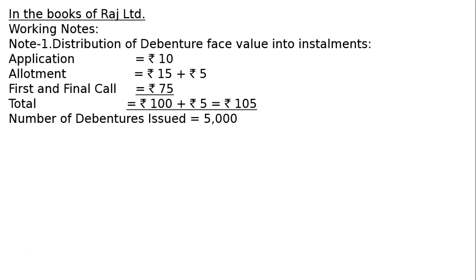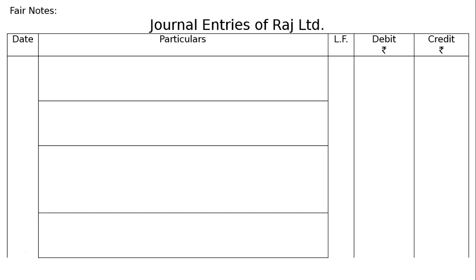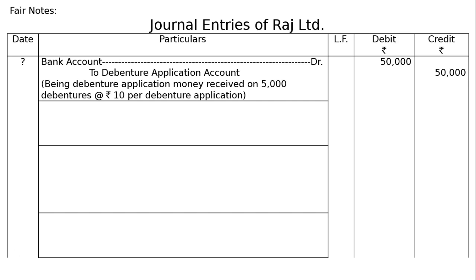Number of debentures issued: 5,000. Number of applications received: 5,000. First journal entry — Bank Account debited to Debenture Application Account, being debenture application money received. 5,000 debentures at Rs.10 per debenture = Rs.50,000. Rs.50,000 in both the debit and credit columns.